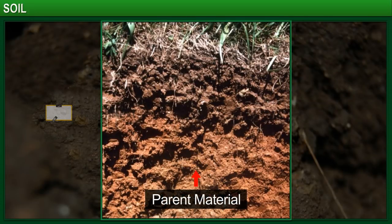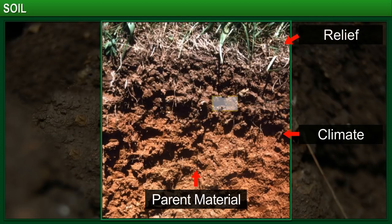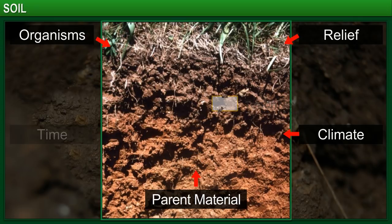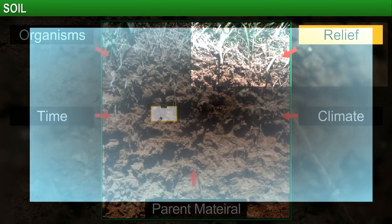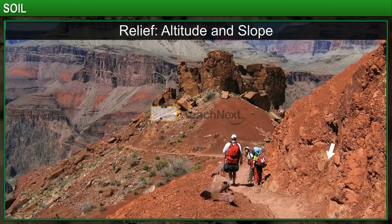Apart from parent rock and climatic conditions, the other factors that affect soil formation are relief, flora, fauna and microorganisms, and time. Let's look at how relief, or the altitude and slope of an area, affect the accumulation of soil.